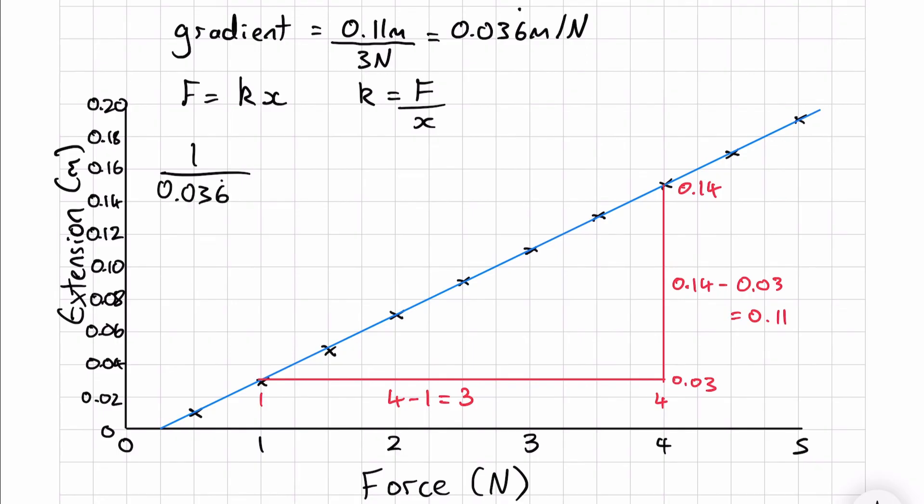So we need to take the reciprocal to get spring constant. So spring constant equals 1 divided by the gradient. This means our spring constant is 27.3 newtons per meter.